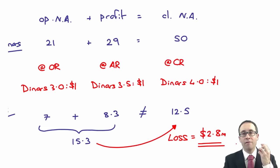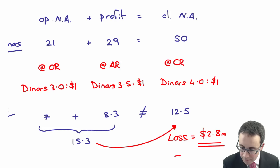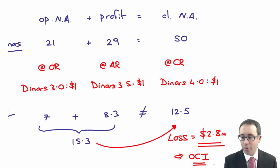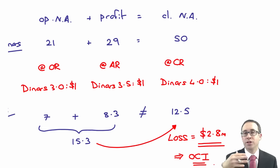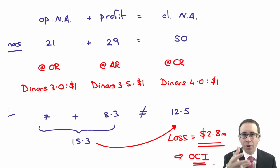It is a loss on translation of the assets and liabilities of the overseas subsidiary — a big 2.8 million dollar loss that we need to include in our financial statements. Where does that loss appear? Well, it's not recognised in profit or loss — essentially we hide it away within other comprehensive income. That loss is shown at the bottom of your statement of profit or loss and OCI. It's hidden away within all of the workings, and this is just a separate way of calculating it — we've actually already taken account of it without even thinking about it.